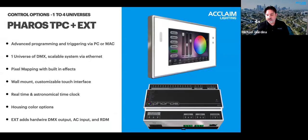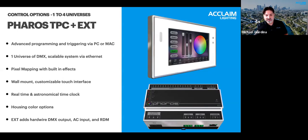Moving on to the Pharos line — still within the one to four universe range. Acclaim carries the Pharos control line, which offers advanced programming via their Designer 2 software and the ability to create large network control systems. The TPC is a one-universe eDMX touchscreen controller. eDMX is DMX over Ethernet in the form of standards such as Art-Net or streaming ACN.